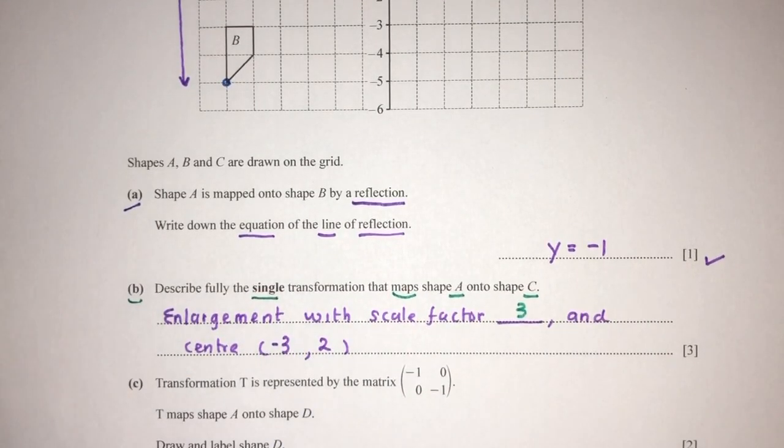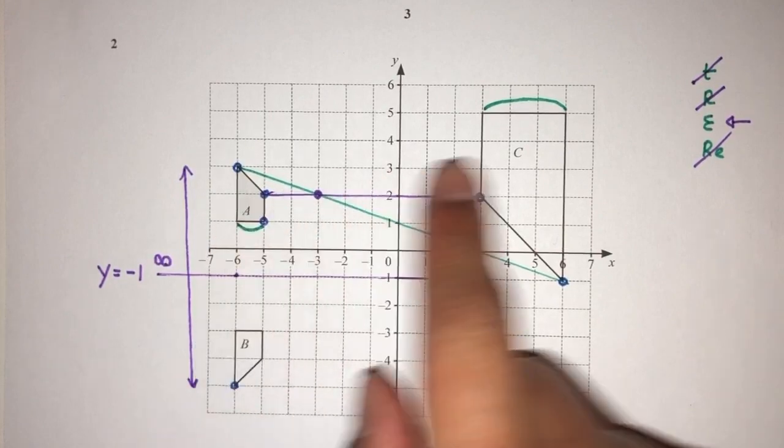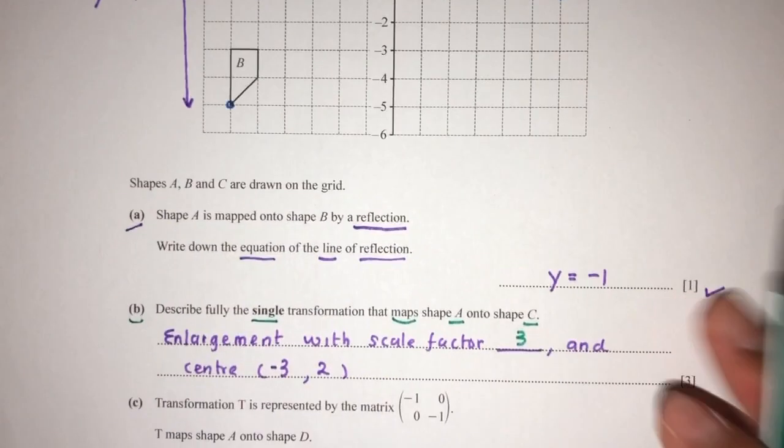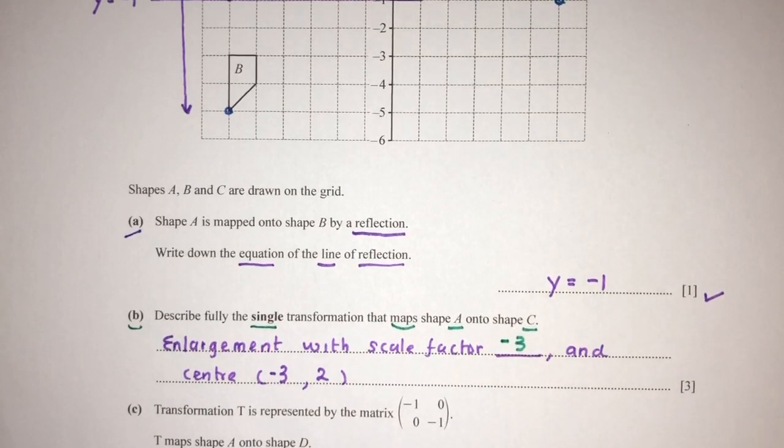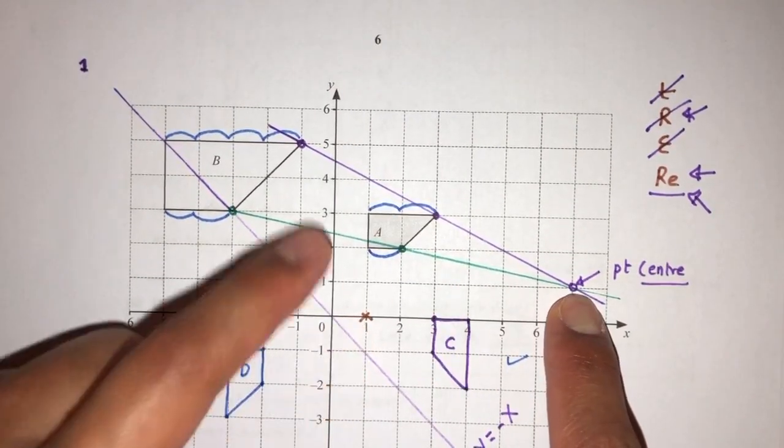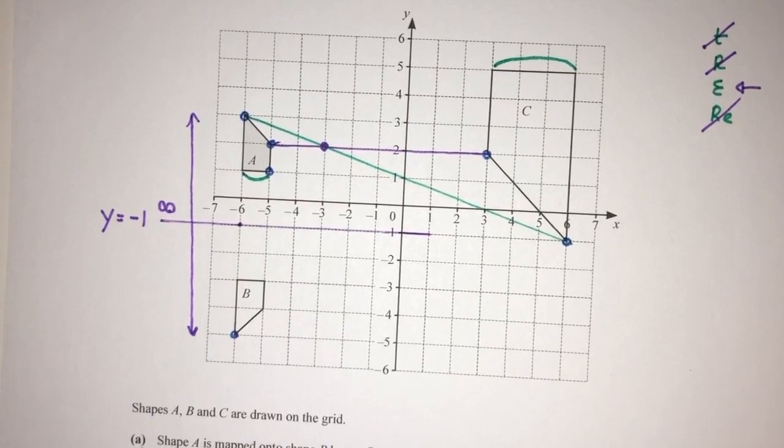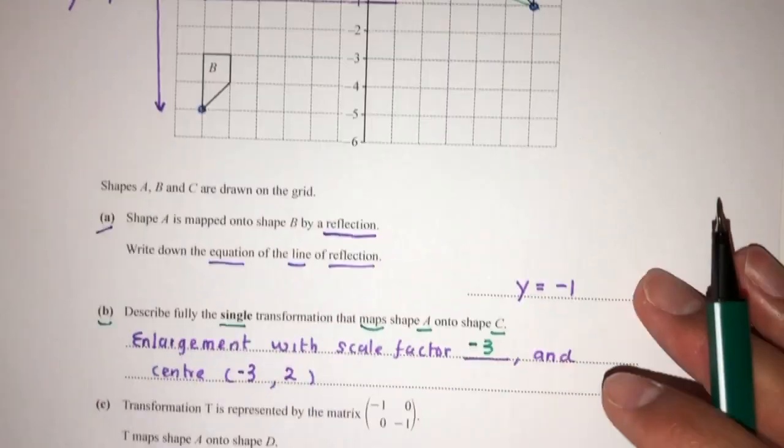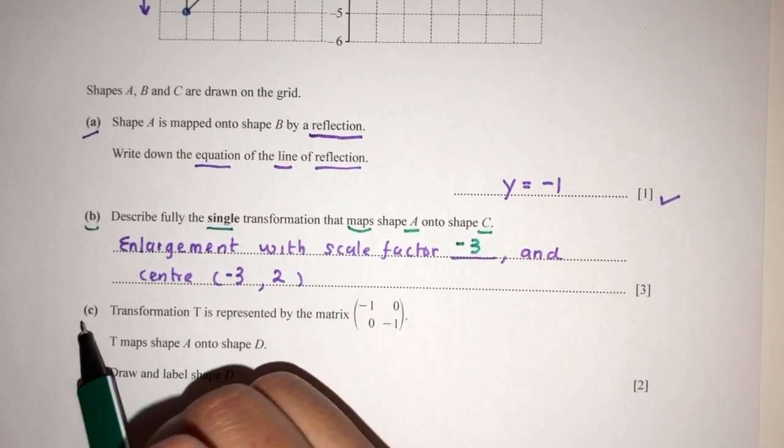Now, the catching point here is that because the center of enlargement is between those two shapes, the scale factor has to be negative. That's the idea. Compared to the first question, as you can see here, the center of enlargement was outside - it was not between them. That's why it was positive 2. But here, because it is in between them, you have to write down the scale factor to be -3. Now for part C, moving on.